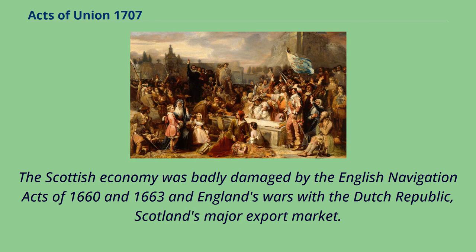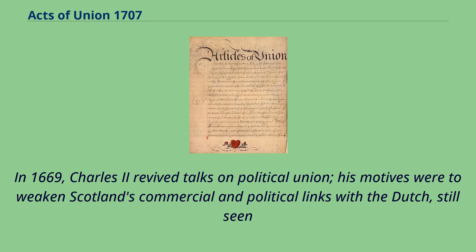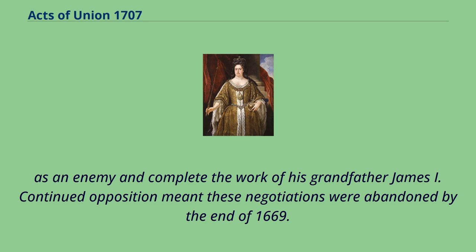The Scottish economy was badly damaged by the English Navigation Acts of 1660 and 1663 and England's wars with the Dutch Republic, Scotland's major export market. An Anglo-Scots trade commission was set up in January 1668, but the English had no interest in making concessions, as the Scots had little to offer in return. In 1669, Charles II revived talks on political union; his motives were to weaken Scotland's commercial and political links with the Dutch and complete the work of his grandfather James I. Continued opposition meant these negotiations were abandoned by the end of 1669.